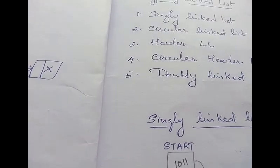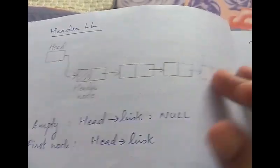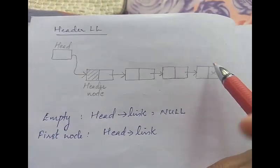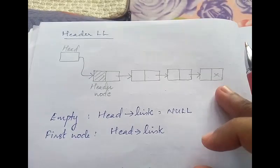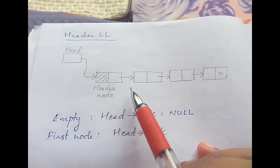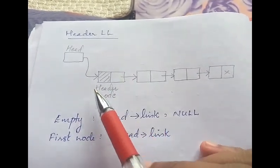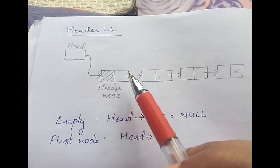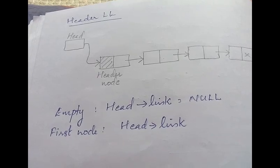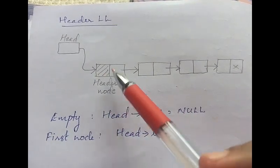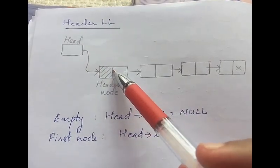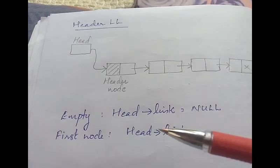The next list type is the header linked list. A linked list is called a header linked list if it contains a special node at the beginning of the list. This special node is called the header node. The data part of the header node holds some information regarding the list itself.